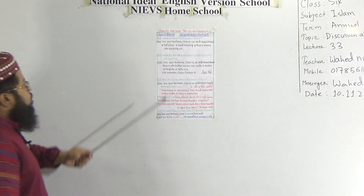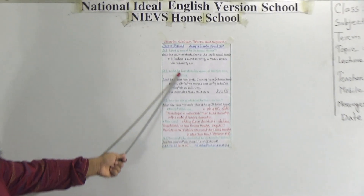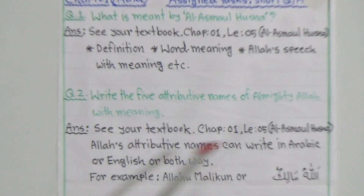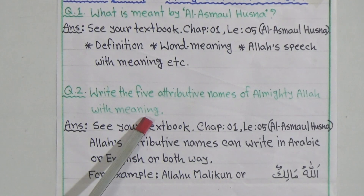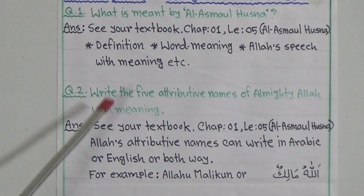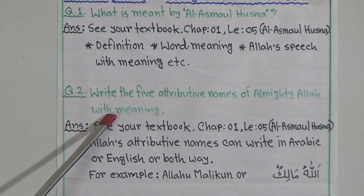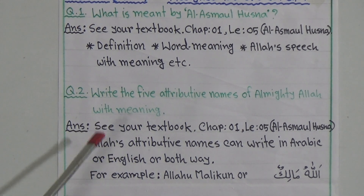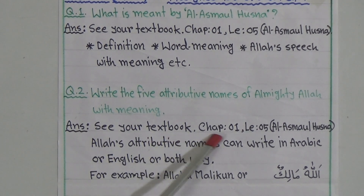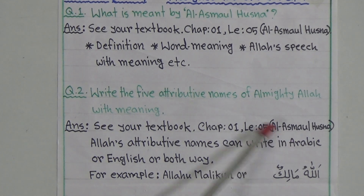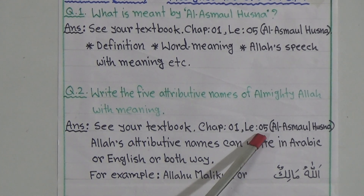Now, question number 2: write the five attributive names of Almighty Allah with meaning. It is very easy — you already learned this in your previous class, Class 5. The same question you got a second time. So in your textbook, Chapter 1, Lesson 5, the Al-Asma-ul-Husna lesson, you will get this answer.